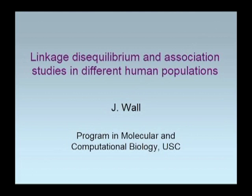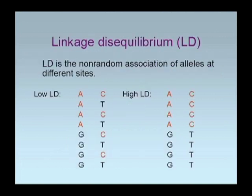David mentioned that there are some issues surrounding what a genetic population is, and part of what I want to discuss is why that's relevant for the planning of association studies. I'll first have to define a couple of terms, and the main one is something called linkage disequilibrium.